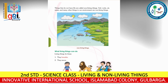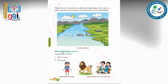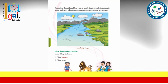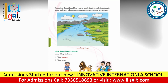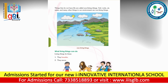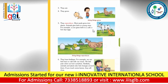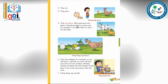What can living things do? They can breathe, move, eat, play, and run — they can do everything on their own. Non-living things cannot do any of these. Living things also eat, grow, and reproduce. Seeds grow into plants, and animals give birth to young ones.